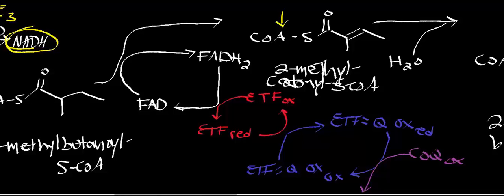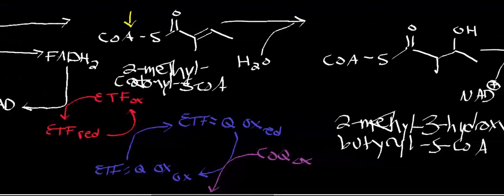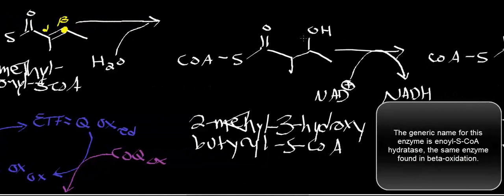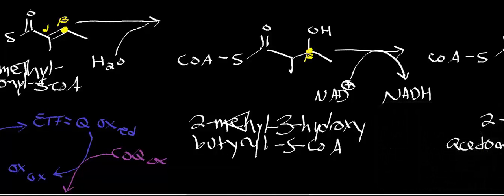Just like in beta-oxidation, the next reaction is a hydration, catalyzed by 2-methylcrotonyl-S-CoA hydratase. Assuming this is your alpha-carbon, you should expect beta-oxidation — a hydroxyl group added to the beta-carbon position. We get a hydroxyl group attached to the beta-carbon, giving us 2-methyl-3-hydroxybutyryl-S-CoA.